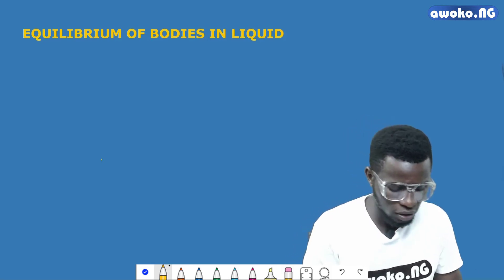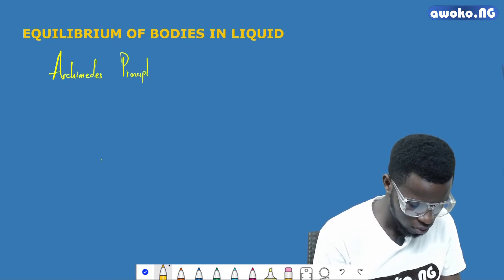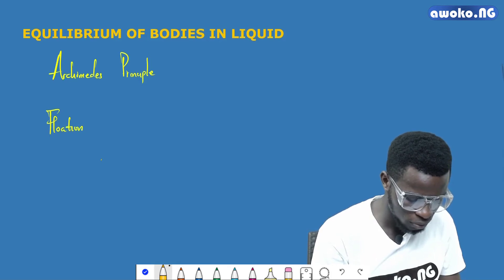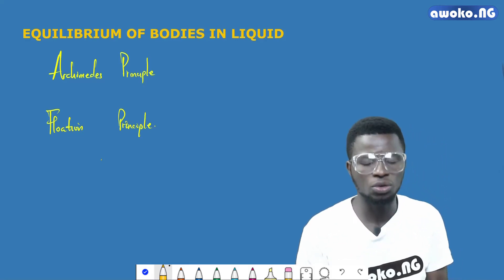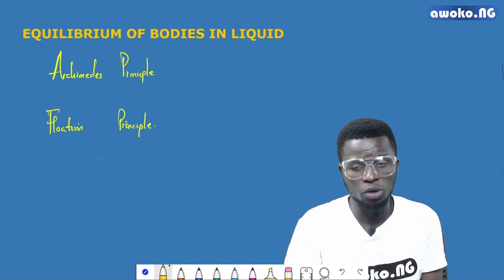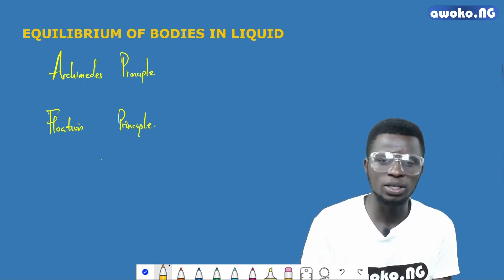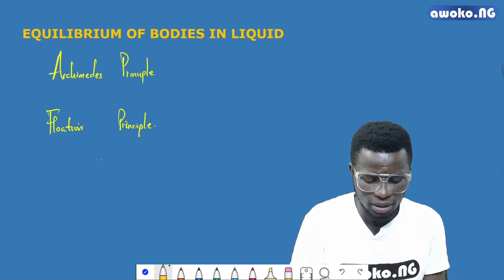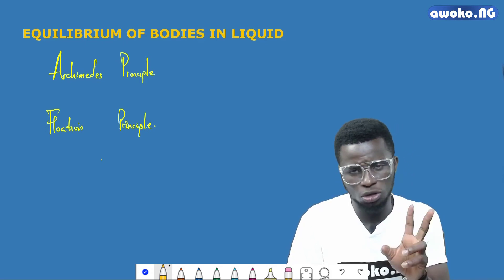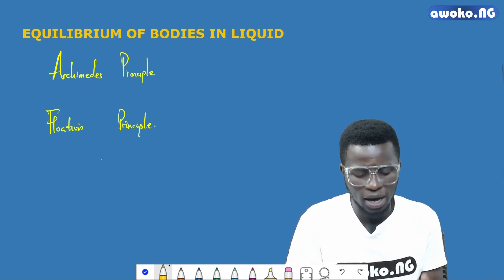The first is the Archimedes principle, and the second is the principle of flotation. These are the two major principles that adequately explain the equilibrium of bodies in liquids. The Archimedes principle states that when a body is completely or partially immersed in a fluid, it experiences an upthrust which is equal to the weight of the fluid displaced by the object.